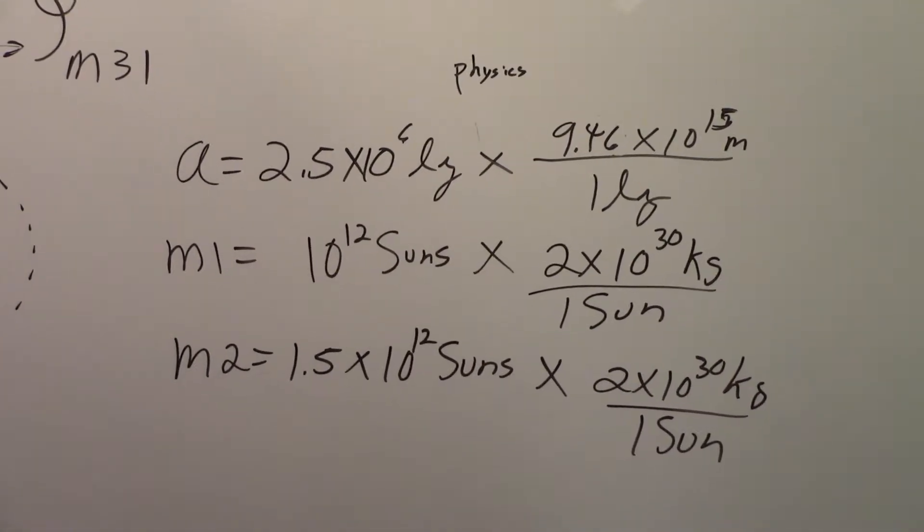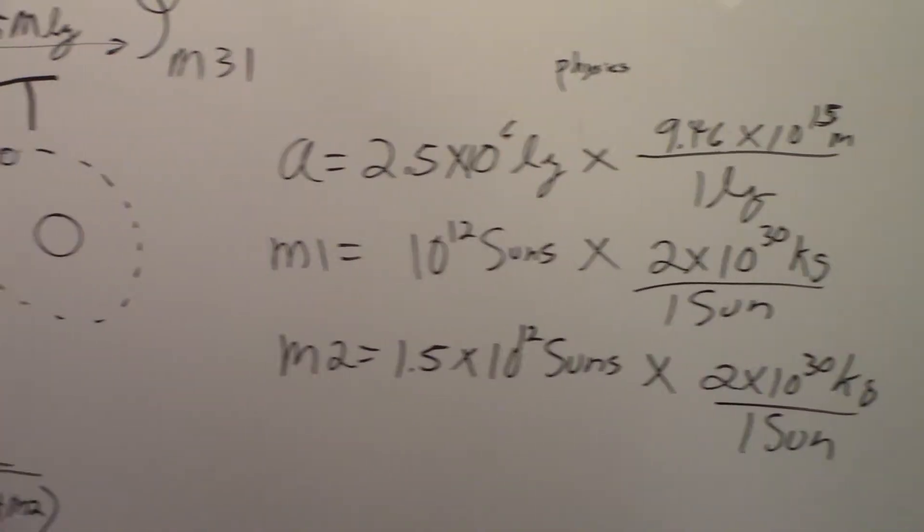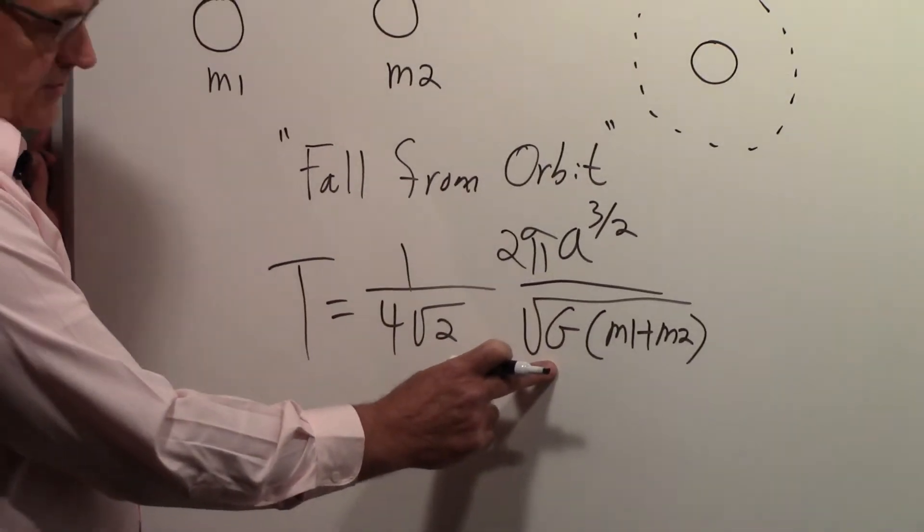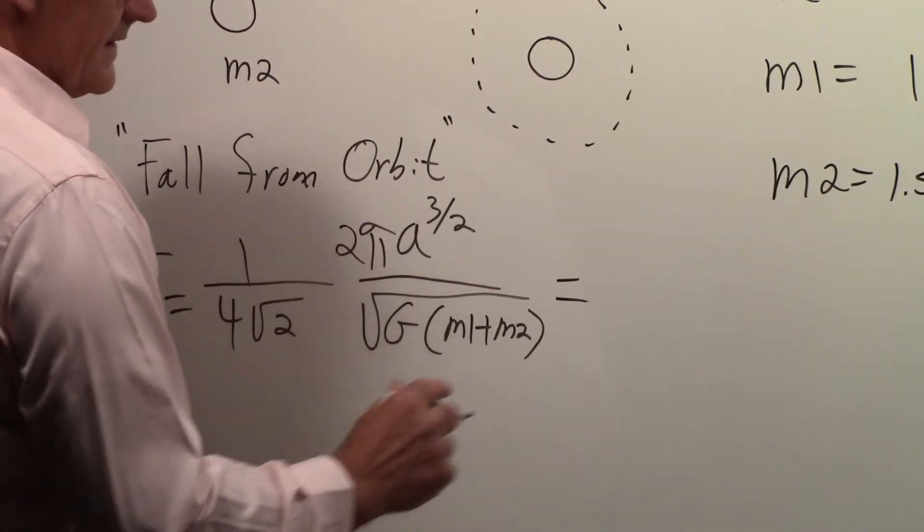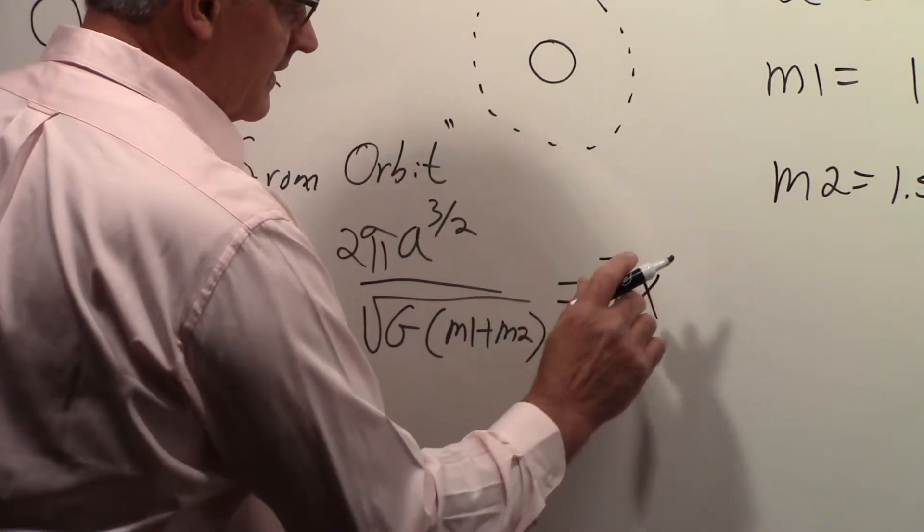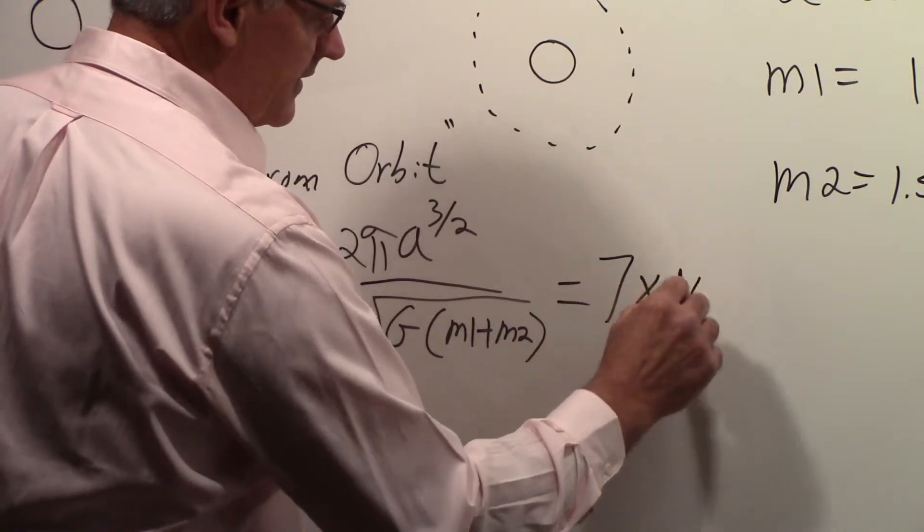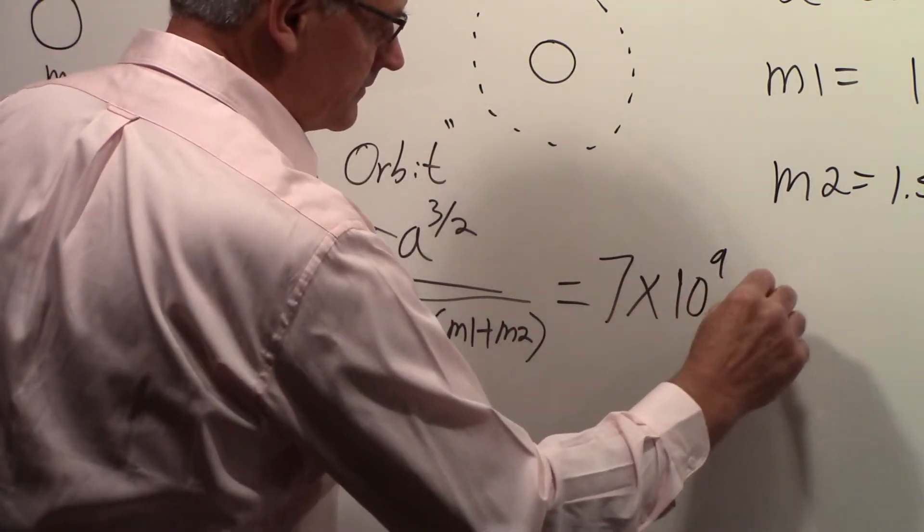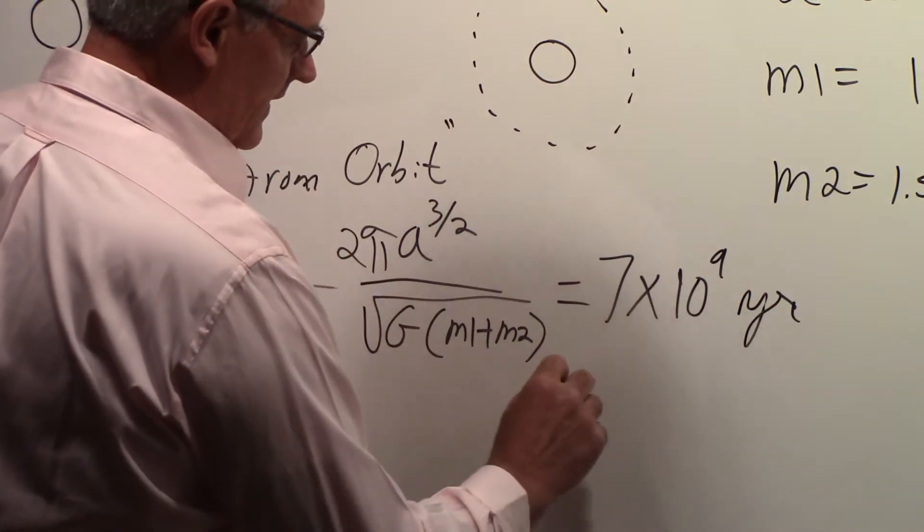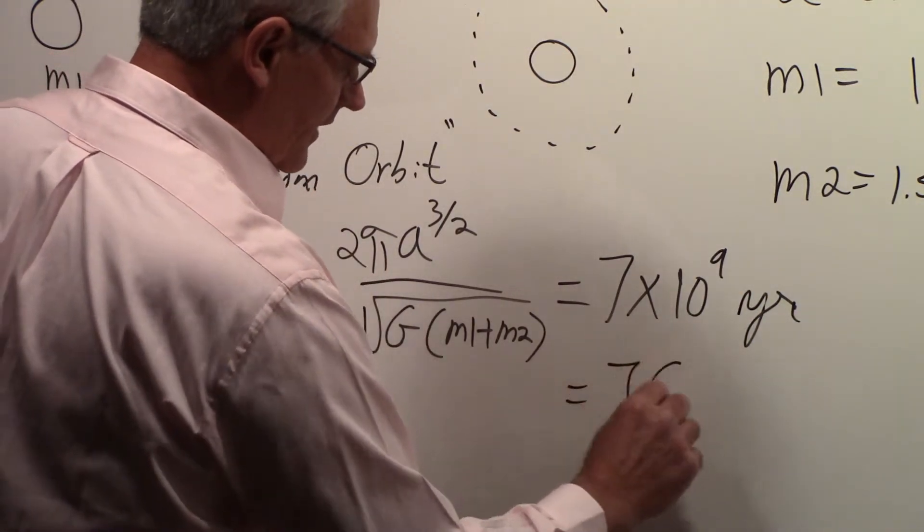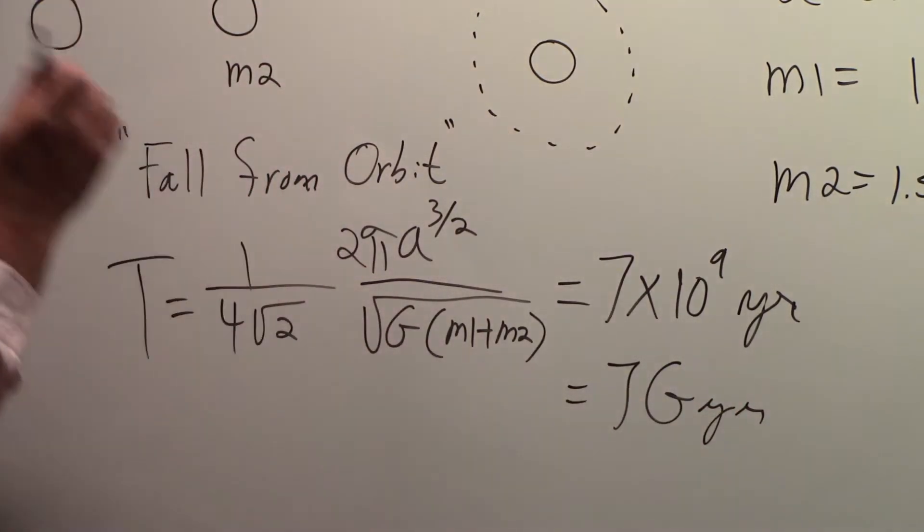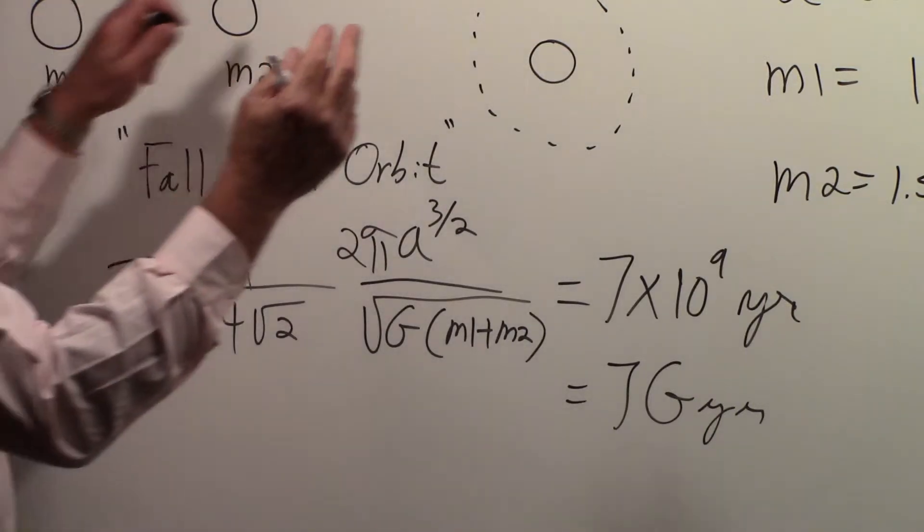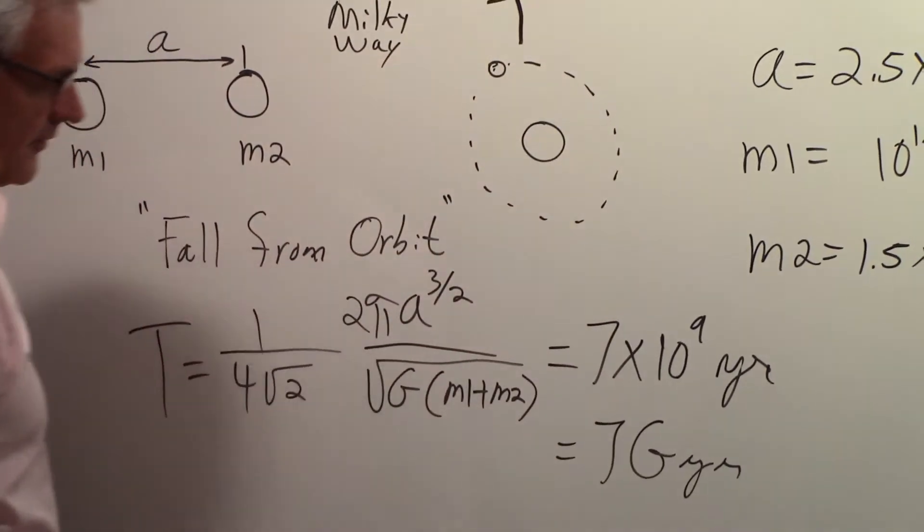Now we have all the numbers we need to put in this equation. You know what the gravitational constant G is, and if you do that, you will find that T is equal to 7 times 10 to the 9th years, so that's 7 giga years, 7 billion years. The Milky Way and M31 will collide.